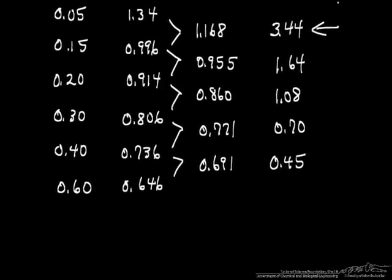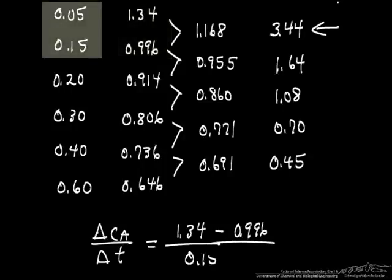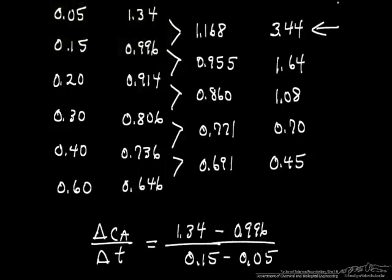where the rate, delta Ca over delta T, that we're going to approximate as the derivative, the rate is 1.34 minus 0.996 divided by 0.15 minus 0.05, so delta T, delta concentration, so this is the change, and this is minus the change because I want to look at the order of the reaction,